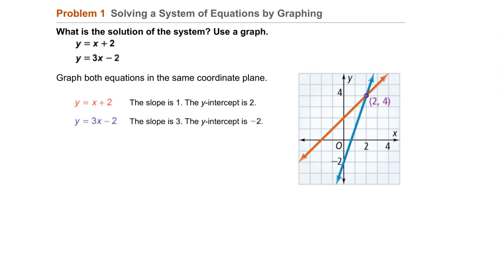Second, y equals 3x minus 2 has a slope of 3, and a y-intercept of negative 2. So we can graph it, as shown at the right, the blue line.